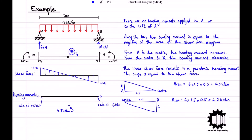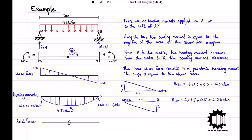The bending moment diagram increases parabolically at a rate of 6 kN at point A, reaches a maximum of 4.5 kNm at the centre of the bar, and then decreases at a rate of 6 kN at point B. There are no axial forces in this example as none of the applied forces had horizontal components, so there is no need to draw the axial force diagram — though if drawn, it would simply show zero along the entire bar.